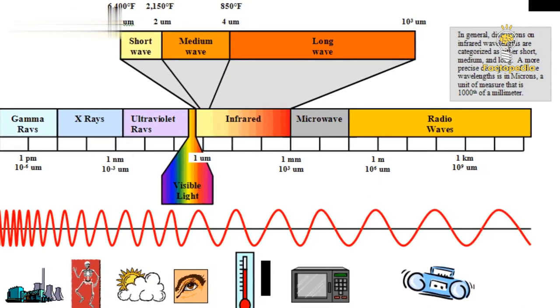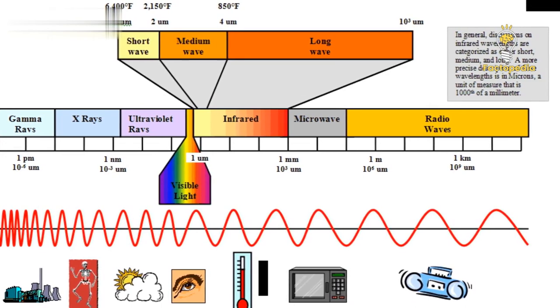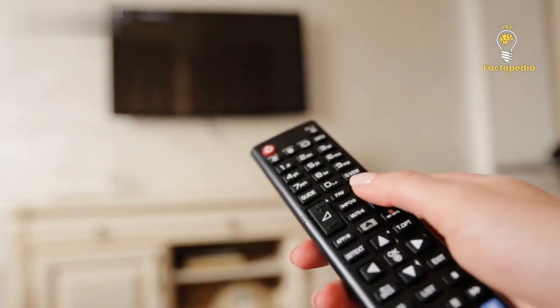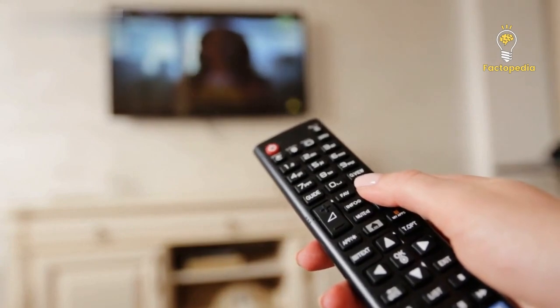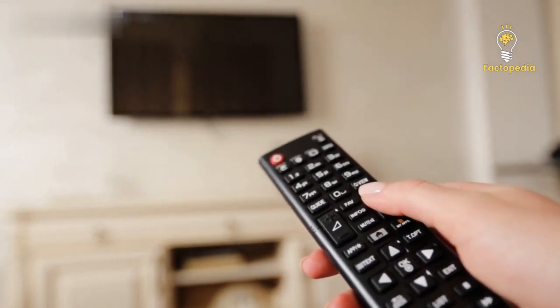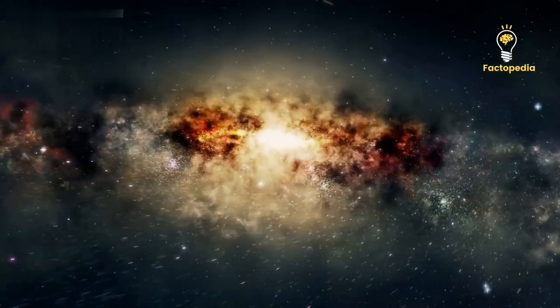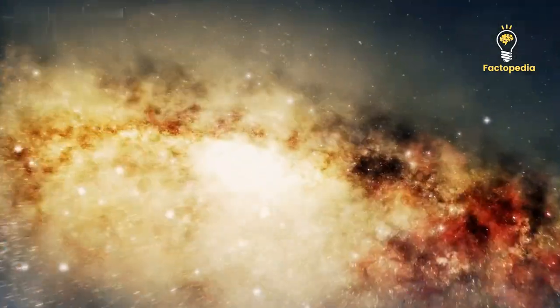However, infrared light has remarkable applications. Think about your TV remote control, which uses infrared light to change channels or adjust your air conditioner. Infrared light has longer wavelengths compared to visible light, enabling it to penetrate through dense gas and dust in space without getting scattered or absorbed.